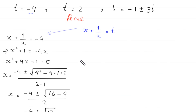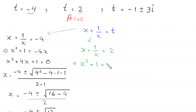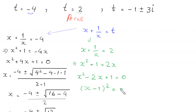When t = 2, the equation becomes x + 1/x = 2. Multiplying both sides by x gives x² + 1 = 2x, so x² - 2x + 1 = 0, which factors as (x - 1)² = 0. Taking the square root of both sides gives x - 1 = 0, so x₃ = x₄ = 1.